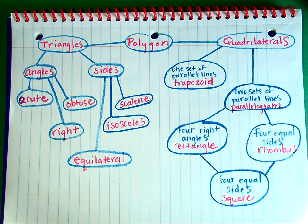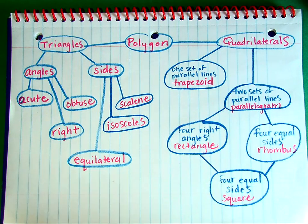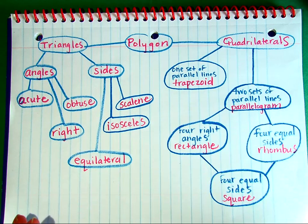There are other polygons that we could branch off of this, not just triangles and quadrilaterals. We could go on further and branch off with pentagons, hexagons, octagons, and so on. These are just the broken-down hierarchies of triangles and quadrilaterals. But as you move forward in your math career in sixth grade, you're going to learn more about the attributes of other types of polygons. In fifth grade, we're just covering triangles and quadrilaterals.